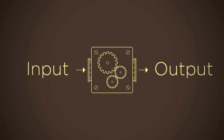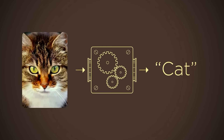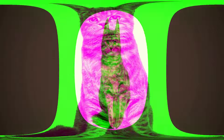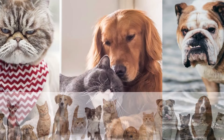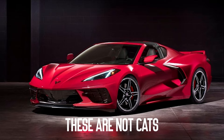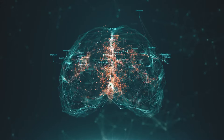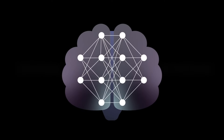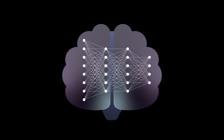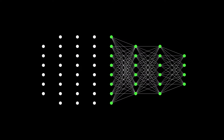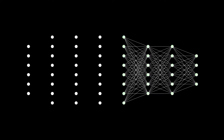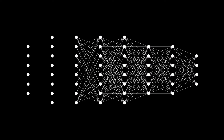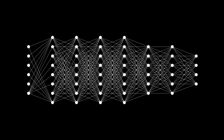Imagine you're trying to teach a computer to recognize pictures of cats. You show it a bunch of cat pictures and tell it, 'these are cats.' Then you show it pictures of other things, like dogs or cars, and say, 'these are not cats.' A neural network works kind of like a simplified model of the human brain — it's made up of layers of artificial neurons, each of which is like a tiny decision maker. When you show the network a picture, each neuron looks at a different part of the image and decides whether it looks like a cat or not. The first layer of neurons might look at basic features like lines and shapes, then, as you move deeper into the network, the neurons combine these features to recognize more complex patterns, like fur and whiskers.